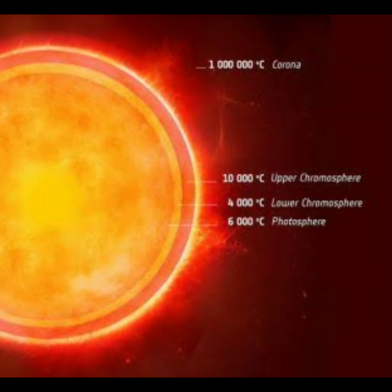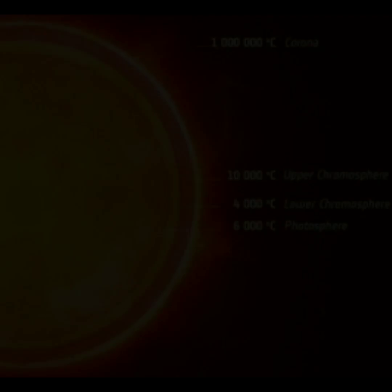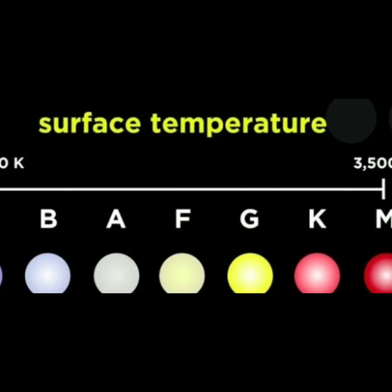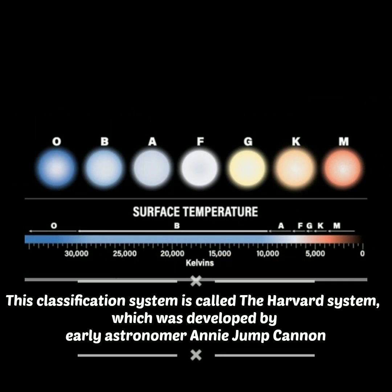Later it was realized that things made more sense if stars were categorized by surface temperature. So we now have O, B, A, F, G, K, and M stars. This classification system is called the Harvard system.